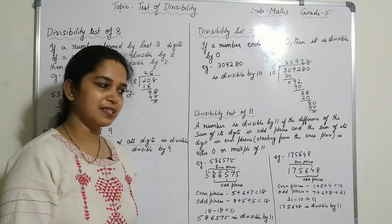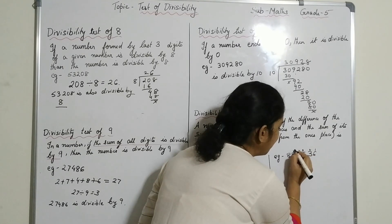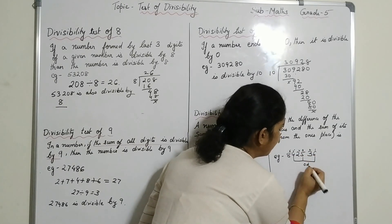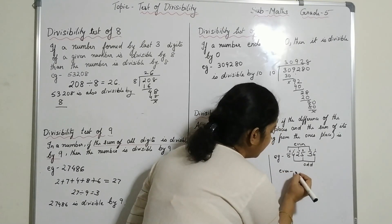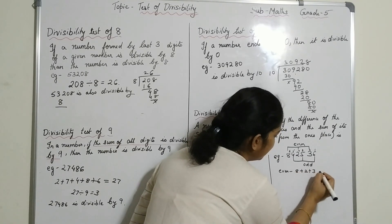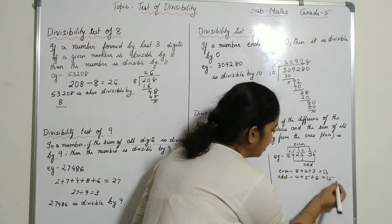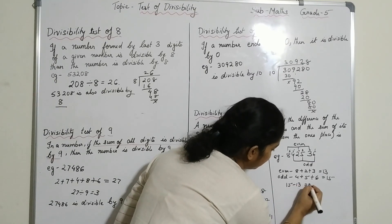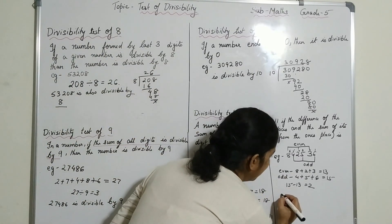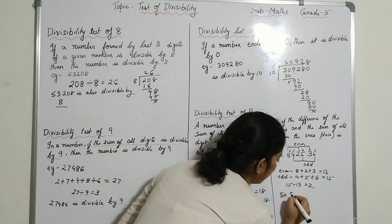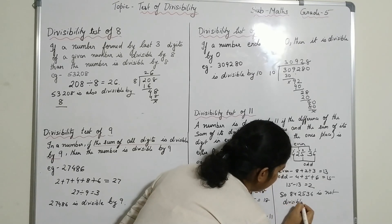One more example: 842536. We segregate the even and odd places. Sum of digits in even places: 8 + 2 + 3 = 13. Sum of digits in odd places: 4 + 5 + 6 = 15. The difference is 15 − 13 = 2. Since the difference is neither 0 nor 11 nor a multiple of 11, the number 842536 is not divisible by 11.